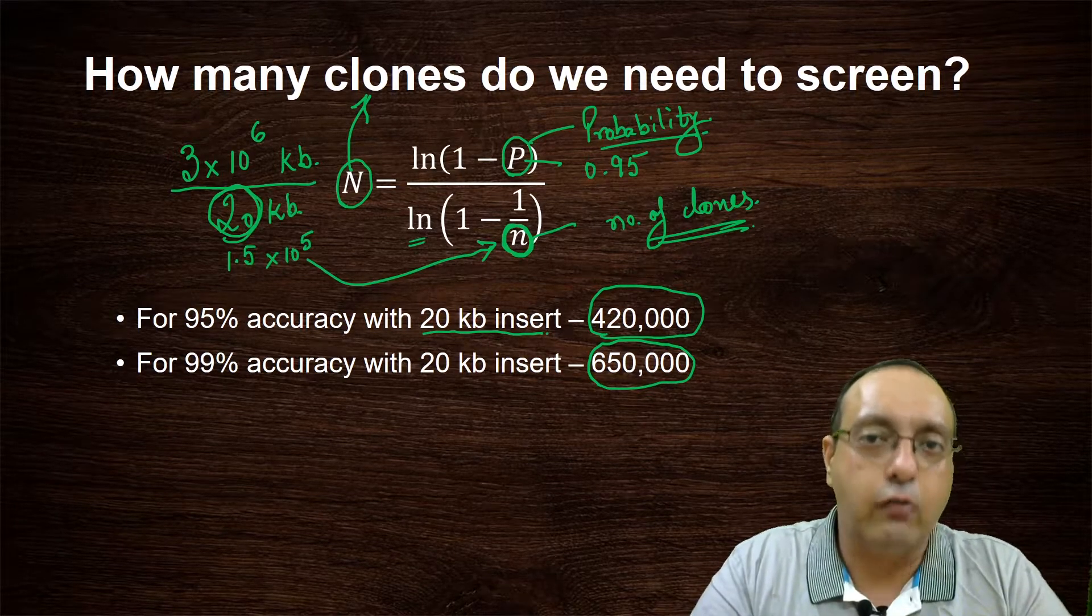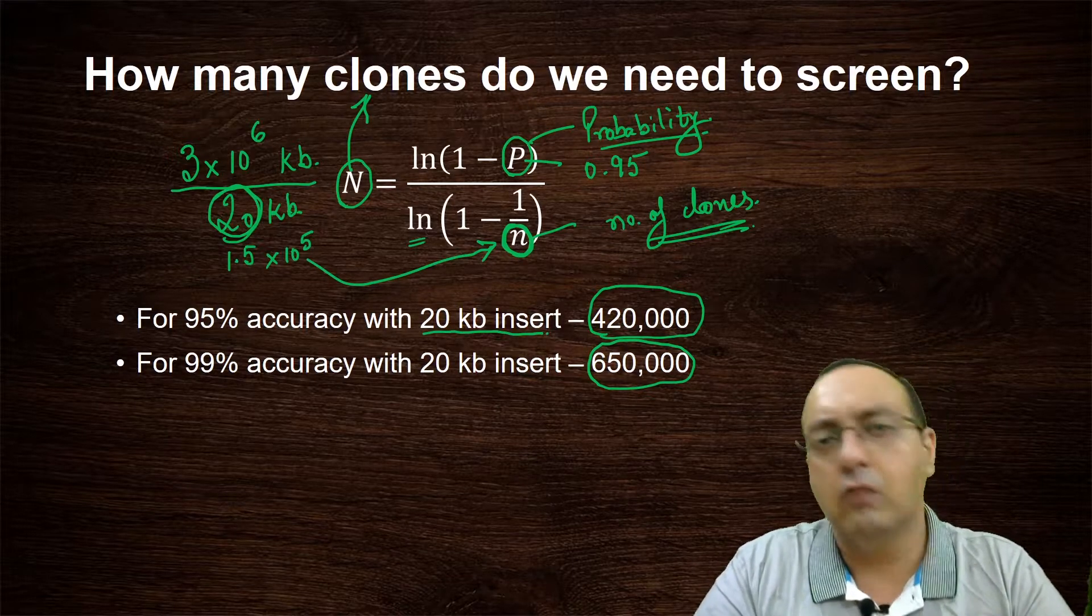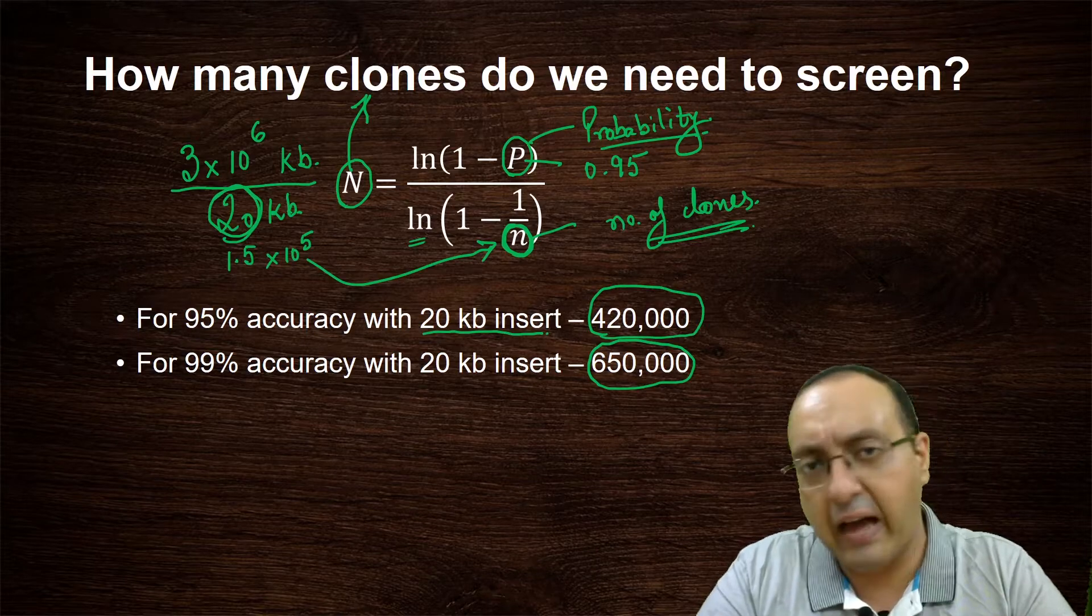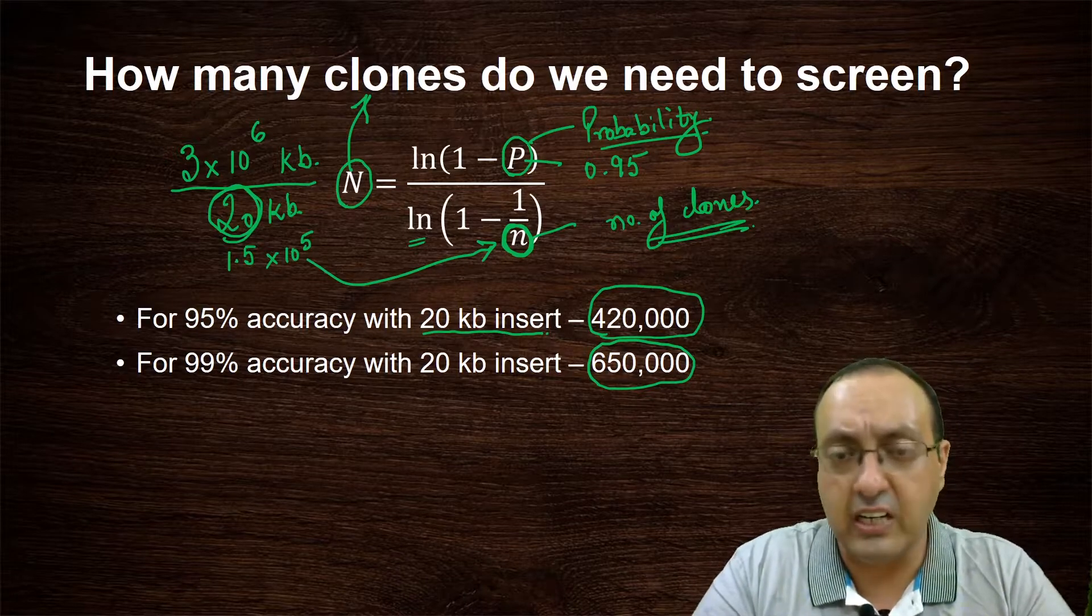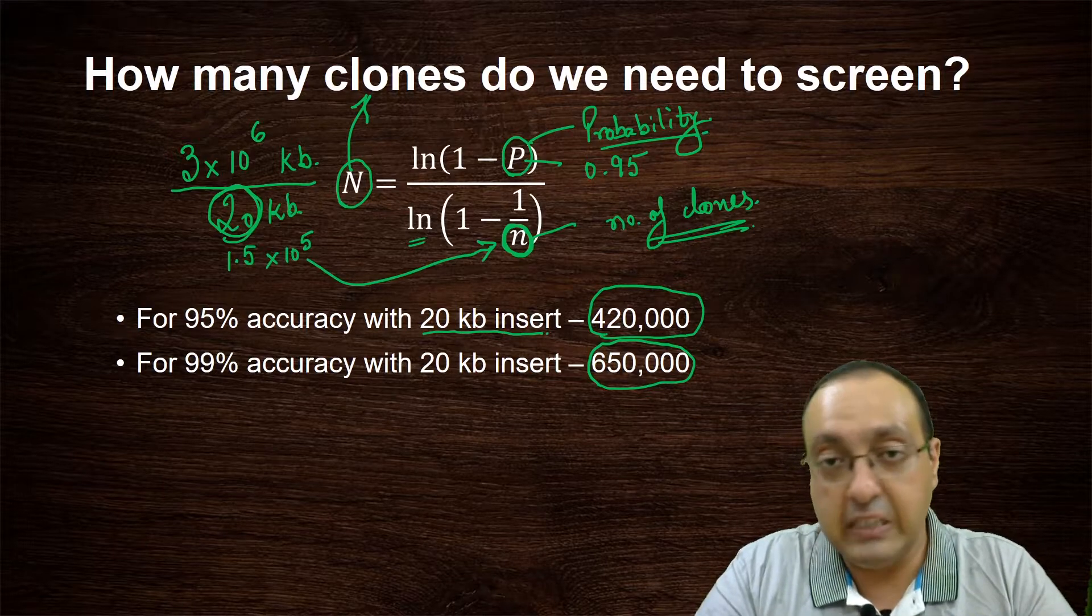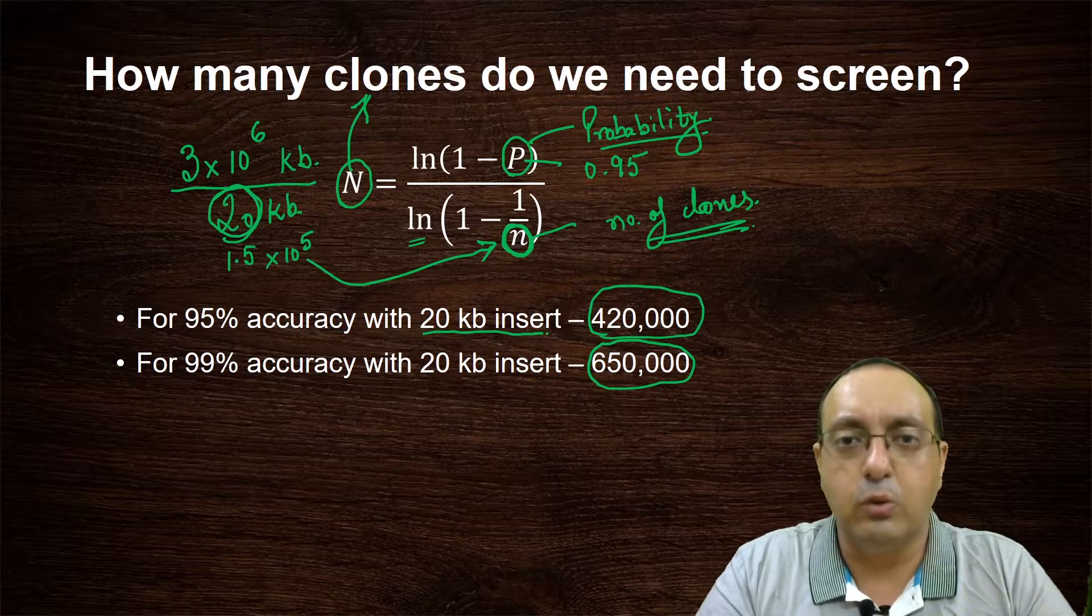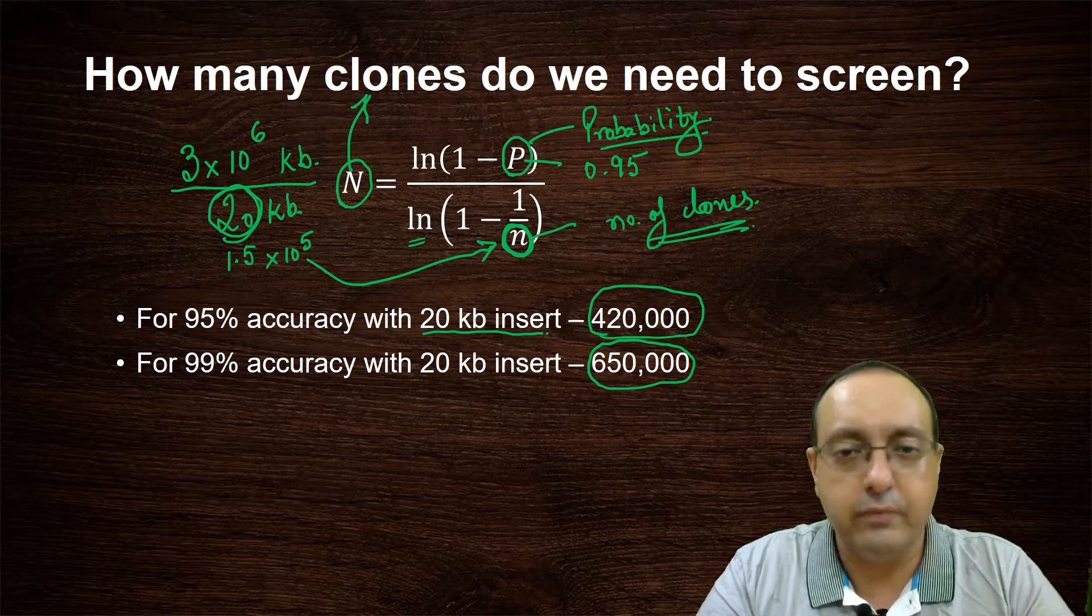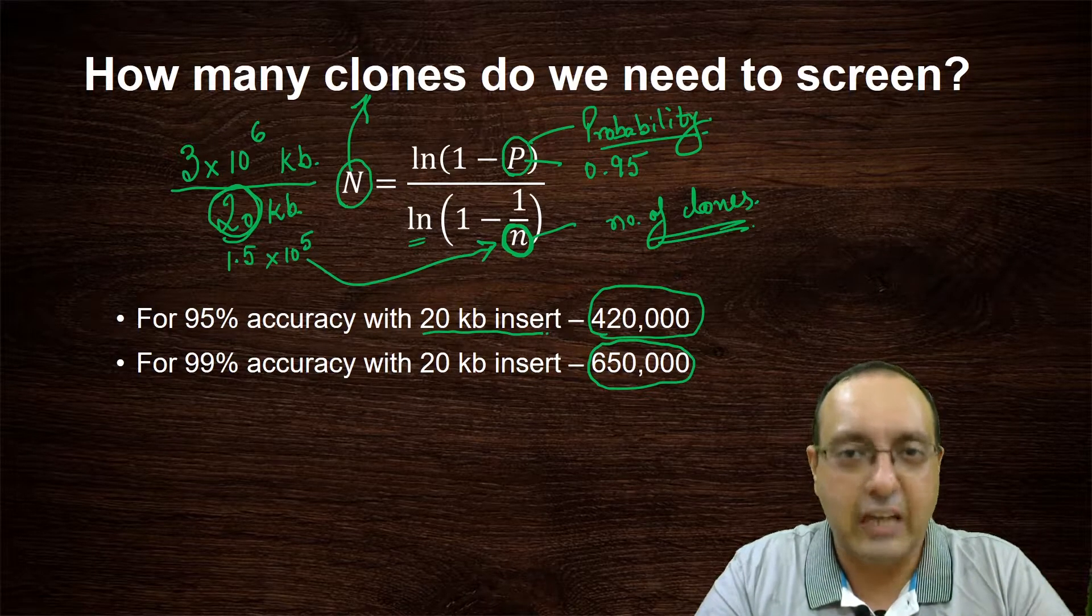So that's why to increase the insert size is really a helpful measure because it really tears down the N. And if you want 99% accuracy, see how the number jumps up to 650,000. That's six and a half lakh clones that you need to screen. Tremendous amount of colonies and a lot of back-breaking work. So this gives you an idea of how many clones you need to screen, usually with better insert sizes and more manageable genomes. For example, if you have a smaller yeast genome or even mouse genomes, but with larger insert size vectors, BACs, YACs, PACs, you can have much less number of clones that you need to screen. And this is a frequently asked question in, for example, CSIR NET examination as well as DBT-JRF examination. So you need to keep this equation in mind.